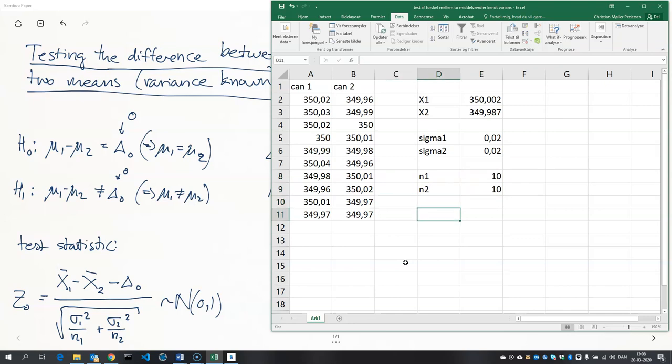And now we are able to compute the test statistic. The test statistic is the difference between the two sample means minus the hypothesized difference, which is zero in our case, and we divide by the square root—so sqrt in English, this is in Danish—and we input the first variance, so I square the standard deviation, divide it by the sample size of that sample.